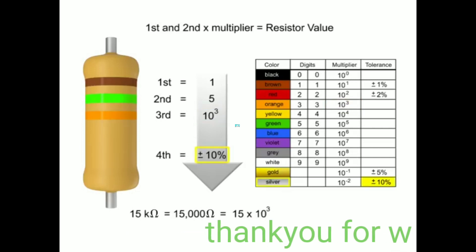The last band would need to be silver to indicate that the resistor has a tolerance of plus or minus ten percent.